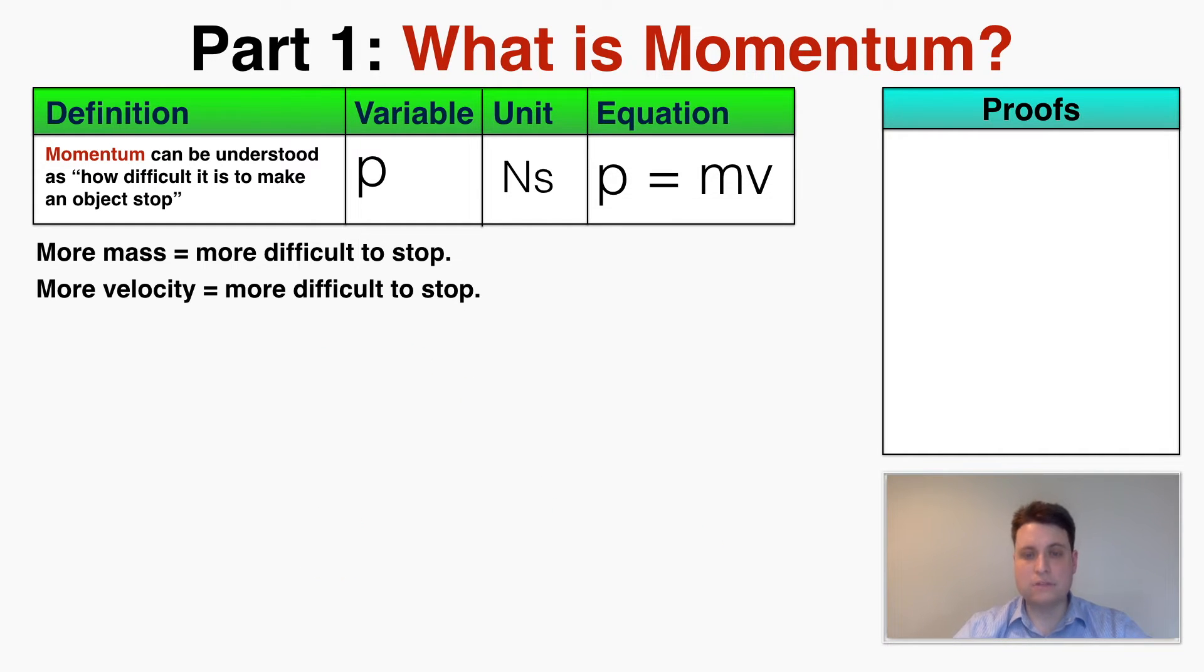Momentum is just equal to mass times velocity, that's all that it is. It's a deceptively simple equation because we can draw a ridiculous amount of new information out of that definition, which we'll go into in future lectures. For now you just need to know that the momentum p is equal to the mass times the velocity. This explains why the unit is the way that it is.